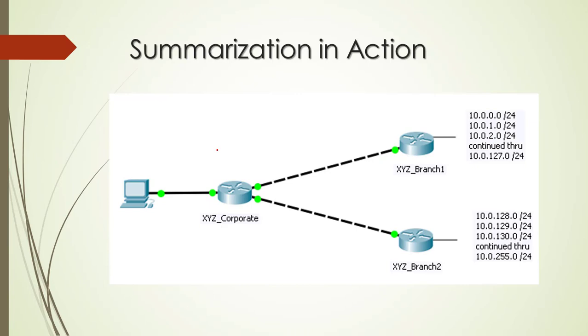To finish up this video let's take a look at putting summarization actually into action. Let's say we have this simple network design here where we have our corporate network router attached to two branch office network routers. On branch one we've got the addresses 10.0.0.0/24 all the way through the subnet 10.0.127.0/24 that's 128 subnets.